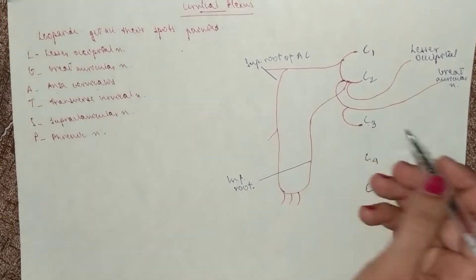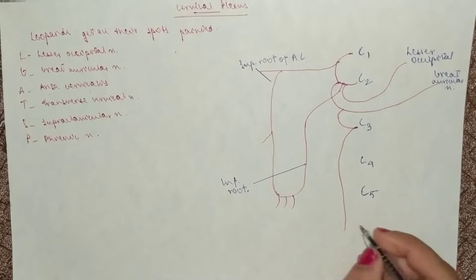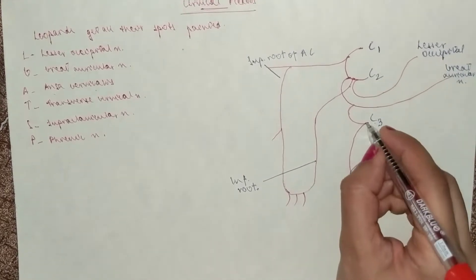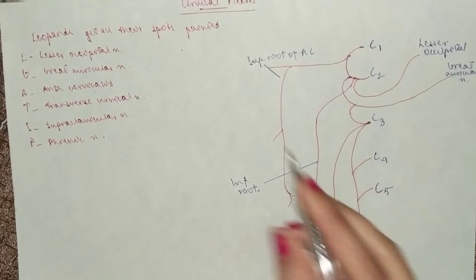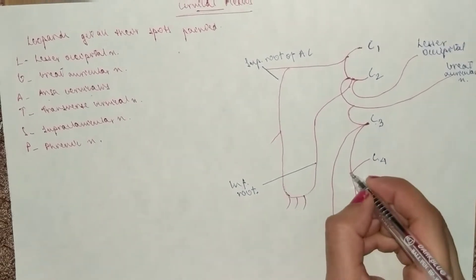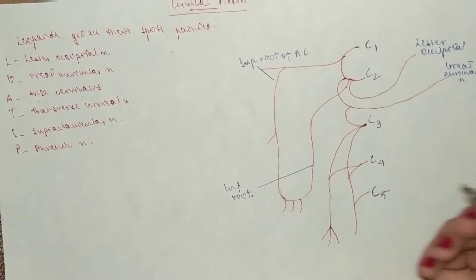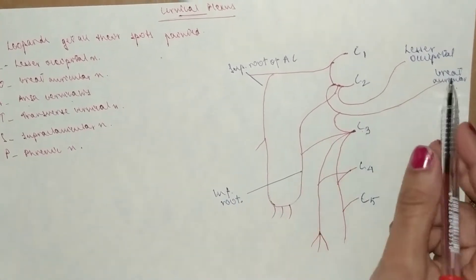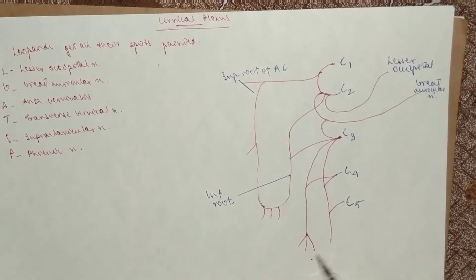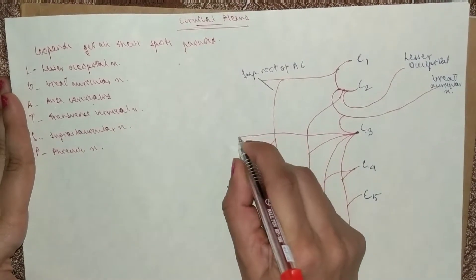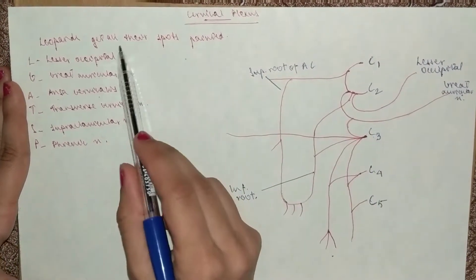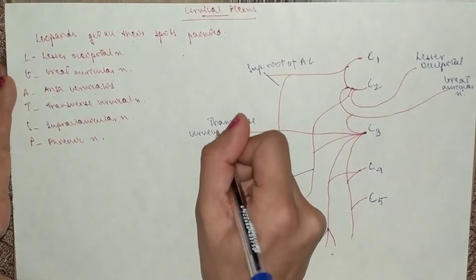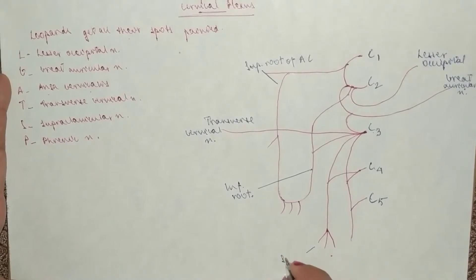For the third nerve from C3, it goes straight down. Both C4 and C5 join it, and it gives out another branch — the supraclavicular — which C4 also joins. C3 is the main one because it gives roots to the ansa cervicalis, the great auricular, and the transverse cervical — which goes straight out. And this one here would be the supraclavicular.